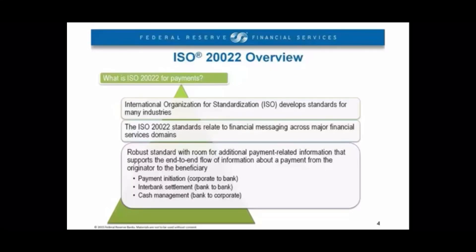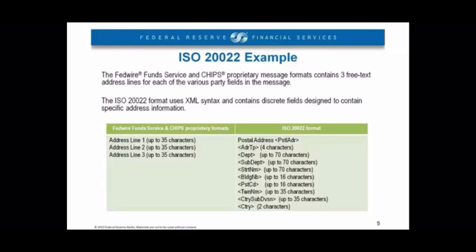Let's walk through an example now of what ISO 20022 looks like on slide 5. Before we get into the example, I just want to explain that ISO 20022 is a global standard, whereas the wire transfer systems in the U.S. — so Fedwire Funds Service and Chips — each have a proprietary standard. While Fedwire and Chips are mappable to each other and to the SWIFT-MT format, they do have their own proprietary format.